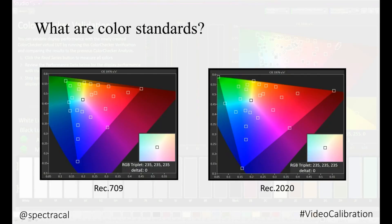So what are color standards? Color standards are a set of rules established by international organizations that dictate the mathematical values of a specific color. For video output, that's Rec. 709 or DCI-P3. For PC output, it's sRGB or Adobe RGB.